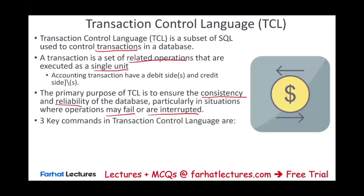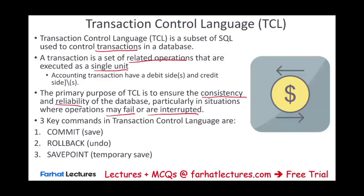There are three components in transaction control language we need to be familiar with: commit, rollback, and savepoint. Briefly: commit is save, rollback is undo, and savepoint is temporary save. We need to go through each one to make sure we understand exactly what each means.